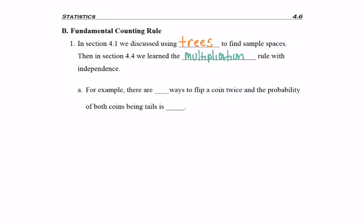And these two things were related to each other, as I'm going to remind you. So, for example, there are four ways to flip a single coin twice, and then based on that, we can find that the probability of both of those coins being tails is one-fourth.